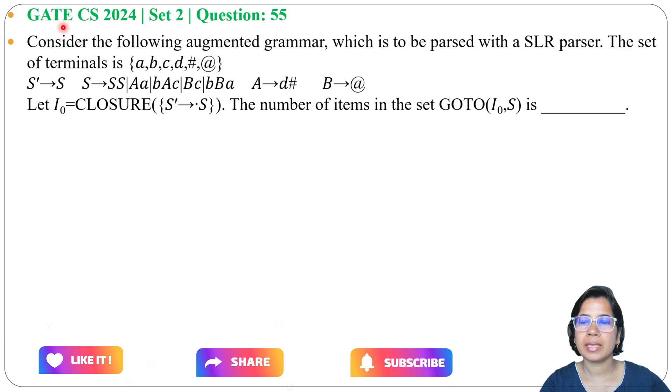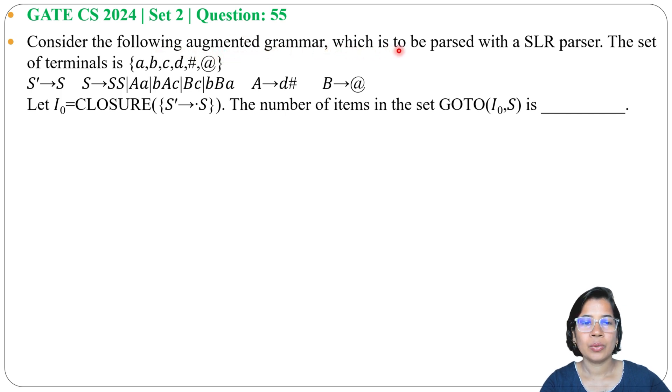Let's solve a previous question on parsing. This question was asked in GATE CS 2024 Set 2, Question Number 55. Consider the following augmented grammar which is to be parsed with an SLR parser. The set of terminals is {a, b, c, d, #, @}. The augmented grammar is given. Let I₀ = CLOSURE of